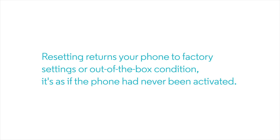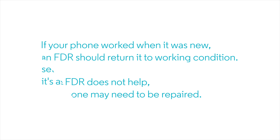Resetting your phone returns it to what we call factory settings, or out-of-the-box condition. It's as if the phone had never been activated. If your phone worked when it was new, an FDR should return it to working condition. If the FDR does not help, your phone may need to be repaired.